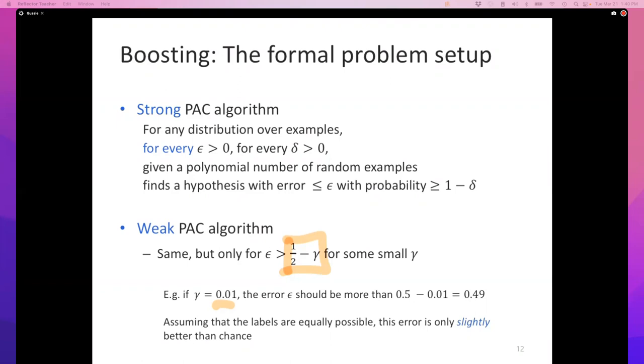This algorithm is guaranteed to give weak performance. It will give you a classifier on any data set whose error is slightly better than tossing a coin.